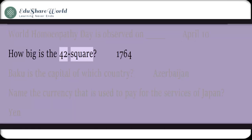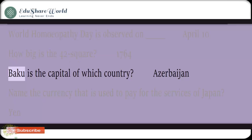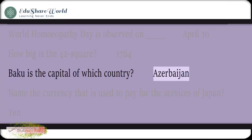How big is 42 squared? The answer is 1764. Baku is the capital of which country? Azerbaijan.